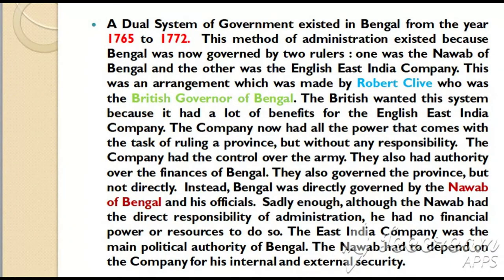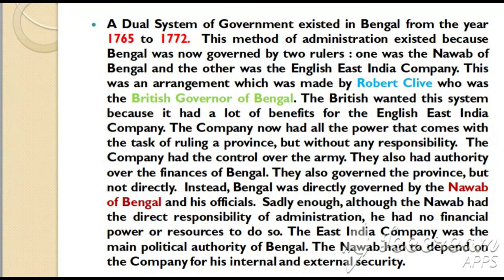The British wanted this system because it had a lot of benefits for the English East India Company. The company now had all the power that comes with the task of ruling a province but without any responsibility. The company had control over the army and authority over the finances of Bengal. They also governed the province, but not directly — Bengal was directly governed by the Nawab of Bengal and his officials.